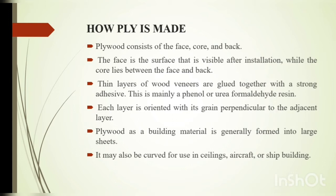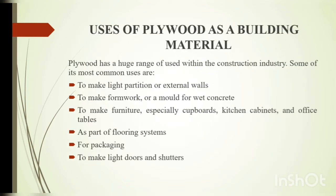Plywood as a building material is generally formed into larger sheets. It is mainly used in ceilings, aircraft or ship building. Its most common uses are to make light partition walls, to make formwork, to make furniture especially cupboards, kitchen cabinets and office tables, as part of flooring systems, packaging, and to make lightweight doors and shutters.